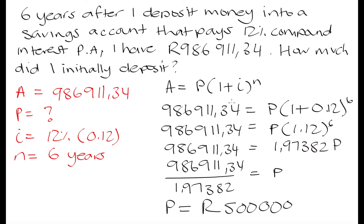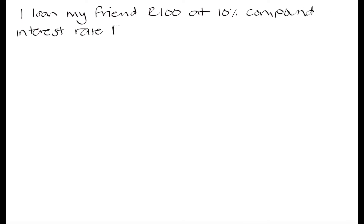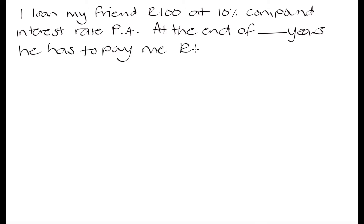So 500,000 rand is how much we initially deposited into that savings account, and after six years we ended up with 986,911 rand and 34 cents because we gained 12% compound interest per year on that 500,000. Now let's go over one last example, which is going to be a bit challenging. I loan my friend 100 rand at a 10% compound interest rate per annum, and at the end of some unknown number of years he has to pay me 121 rand. How long did it take?